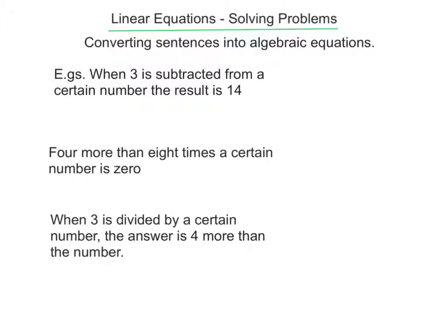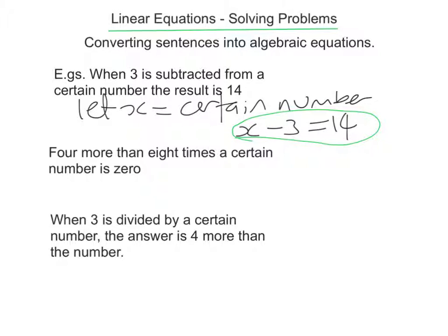In the first example, when 3 is subtracted from a certain number the result is 14. The first thing we need to do is decide what the letter is going to be. A certain number is the unknown pronumeral, so I'm going to let x equal a certain number. Then I need to subtract 3 from it, so x take away 3 and the result is 14. This algebraic equation could be used to solve for x.